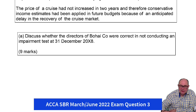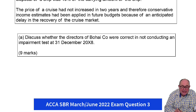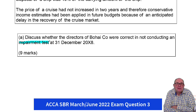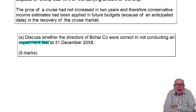The first requirement is about impairment. Even before you read the scenario, remember that you have to do an impairment calculation if there's an impairment indicator, that you then have to write down assets if necessary to recoverable amount, and any loss would go in the profit and loss.